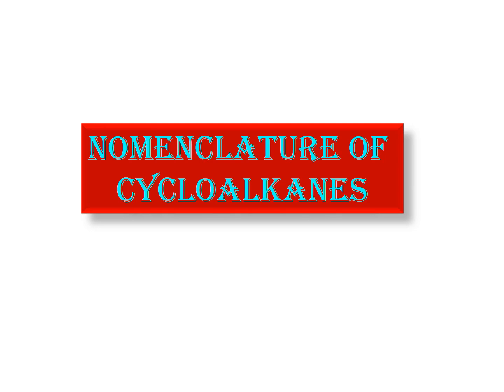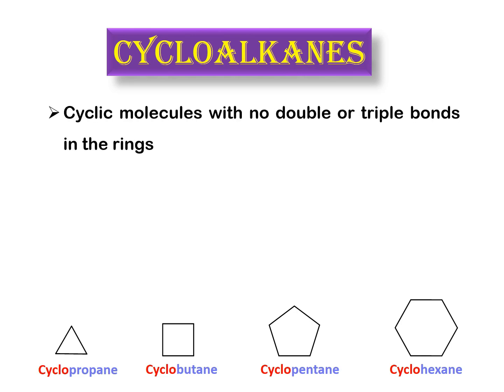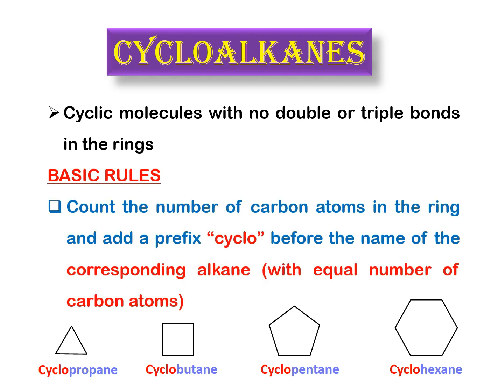Cycloalkanes are cyclic molecules with no double or triple bonds in the rings. The basic rule for naming a cycloalkane is to first count the number of carbon atoms in the ring, and then add a prefix 'cyclo' before the name of the corresponding alkane — meaning an alkane with an equal number of carbon atoms as the ring.